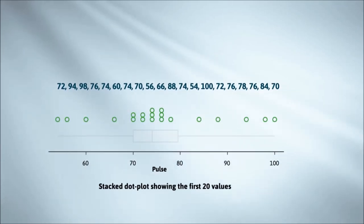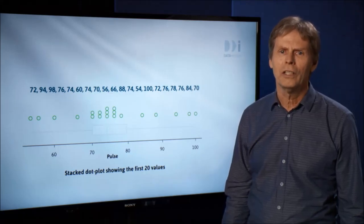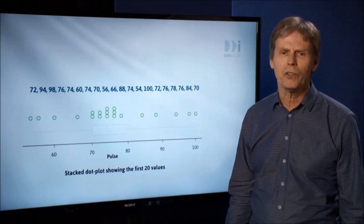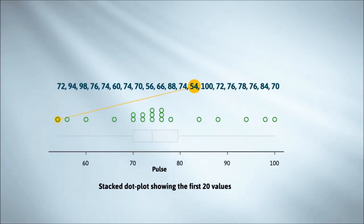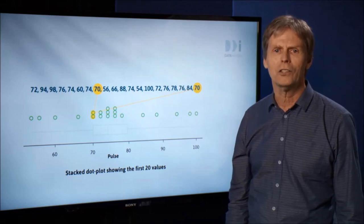This is the simplest plot you can construct of a set of numbers. It's called a stacked dot plot. Each value is plotted against the scale using a dot, so each dot represents a person. This dot represents someone with a pulse rate of 54, someone with a rate of 56, and so on. When people have the same value we stack them one above the other so we can see how many there are, hence the name stacked dot plot.